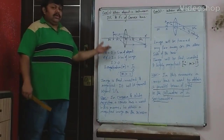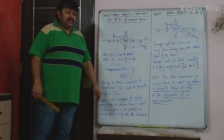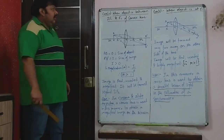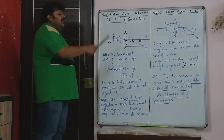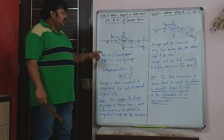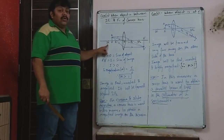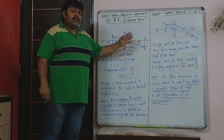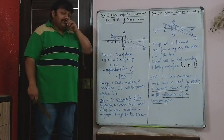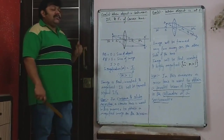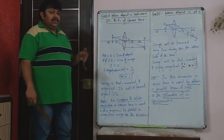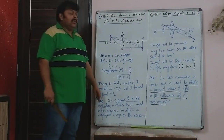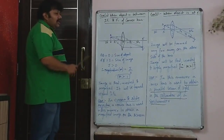So now, students, we will continue with lens — the remaining ray diagrams. For convex lens, we had last covered when the object is at 2F1. We got the image at 2F2, the image and object were the same size, so magnification was 1. We had seen that it was used in a telescope. So now we go on to the next part.